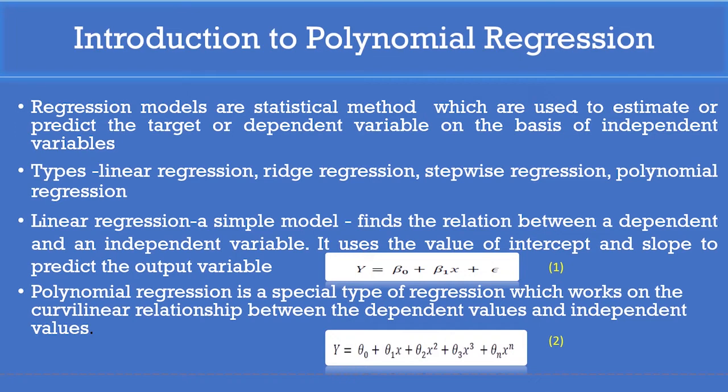Theta0 is called the intercept term or bias term. Theta1 to thetan are called the coefficient parameters or slope values of the model. We can see from the equation, the independent variable x is given power of 2, 3, etc., up to power of n. The maximum power of the model, n, is called the degree or order of the model.